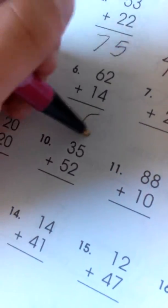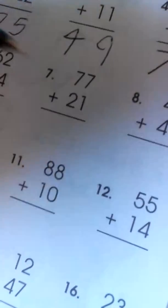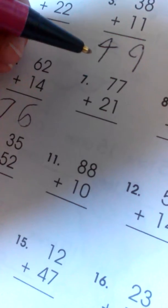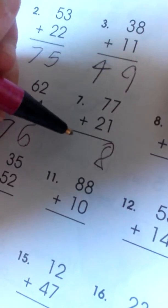2 plus 4 is 6. 6 plus 1 is 7. The answer is 76. 77 plus 21. 1 plus 7 is 8. 7 plus 2 is 9. So the answer is 98.